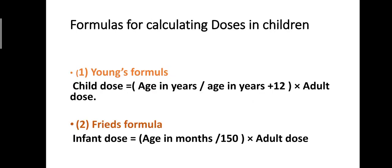Formulas for calculating doses in children. First formula - Young's formula: child dose equals age in years upon age in years plus 12, into adult dose. Second, Fried's formula: infant dose equals age in months upon 150, into adult dose.